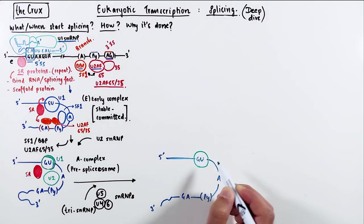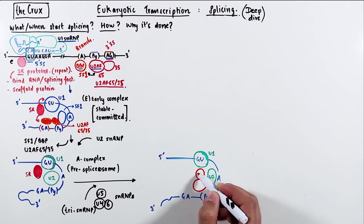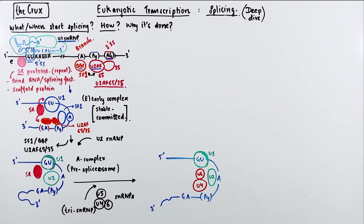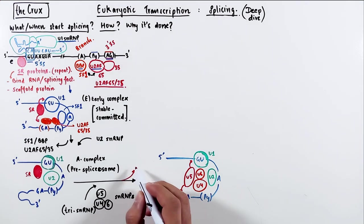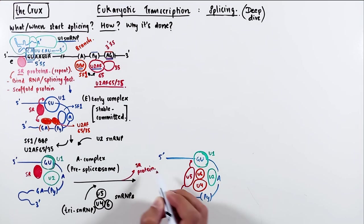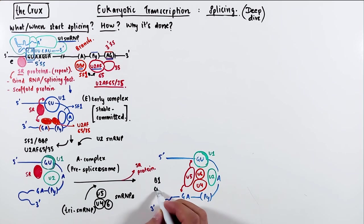In this complex, the U6 interacts with U1, U4 with the pyrimidin stretch and 3' splice site, and the U2 snRNP. The U5 takes on the role of bridging the exons, and all these snRNPs in general, which means that it replaces the SR proteins in its function.